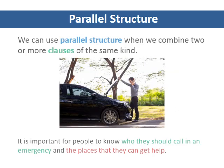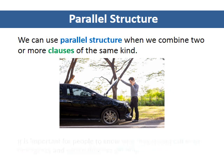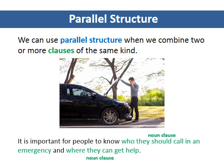We can use parallel structure when we combine two or more clauses of the same kind. The sentence below has a noun clause followed by a noun plus adjective clause. Therefore, the clauses are not parallel. How can we change the second idea to a noun clause? We can replace the noun plus adjective clause with the noun clause 'where they can get help.' The sentence now has two parallel clauses combined with and.